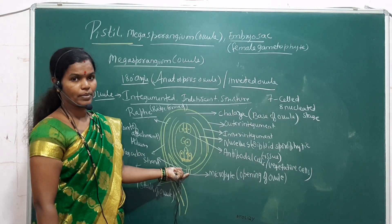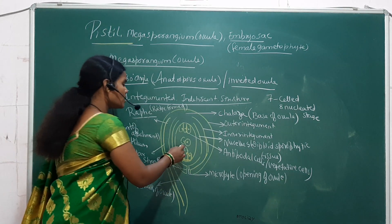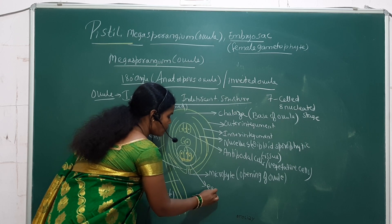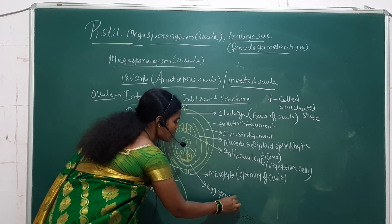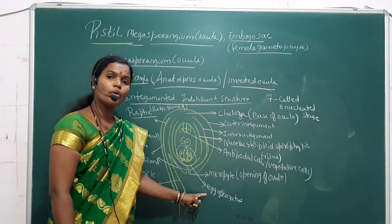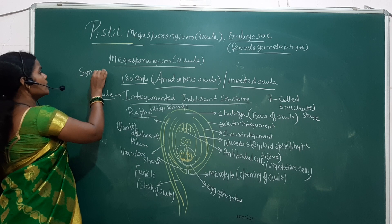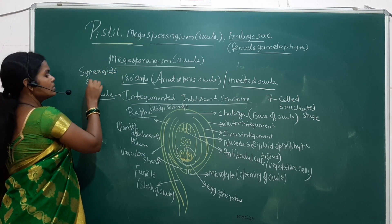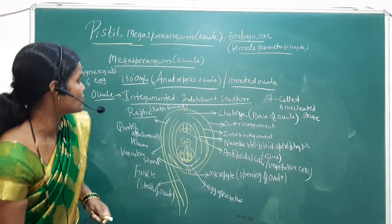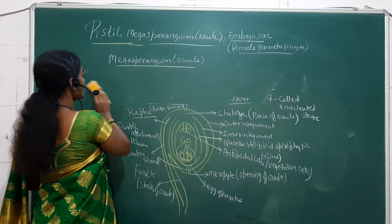Towards the micropyle, or towards the opening of the ovule, we are going to see this particular region called the egg apparatus. The egg apparatus is the combination of the synergids and the egg.